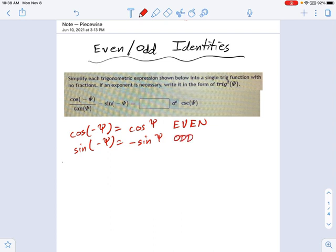So if I take those two substitutions and put them in here, this is what I get. I get cosine of psi divided by tangent of psi minus, well, minus negative sine of psi, right? Negative sine of psi is what this sine of negative psi thing was up here.